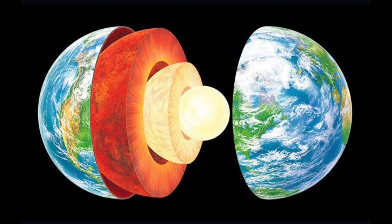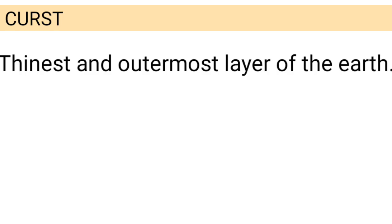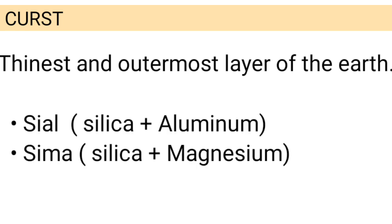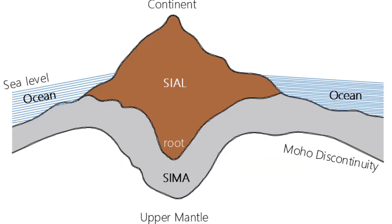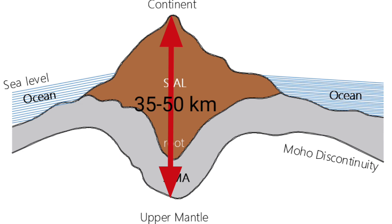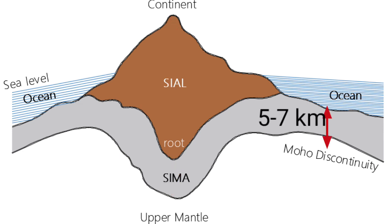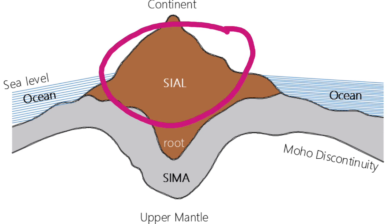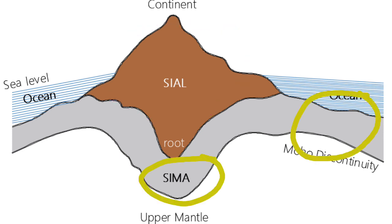The first layer is the crust, which is considered the thinnest and outermost layer of the Earth. It is divided into two parts: SIAL and SIMA. SIAL stands for silica and aluminium; SIMA stands for silica and magnesium. The thickness of the crust varies from place to place — under the continents it is 35 to 50 kilometers, and under the oceans it is 5 to 7 kilometers.